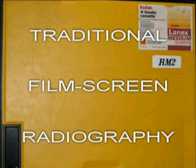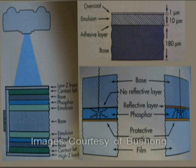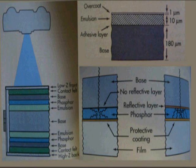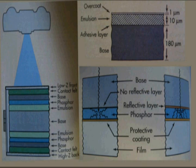Let's begin with a brief overview of what each imaging system is. In screen film radiography, the receptor consists of the film mounted in contact with either one or two intensifying screens. Intensifying screens are thin sheets or layers of fluorescent materials. The screen film combination is housed in either a cassette or a film changer.